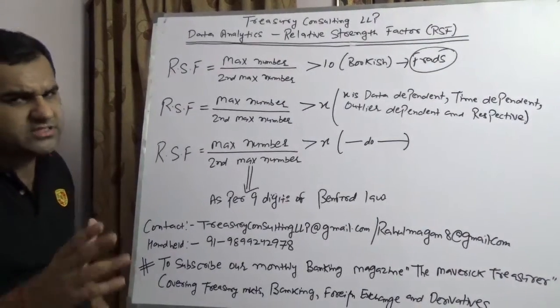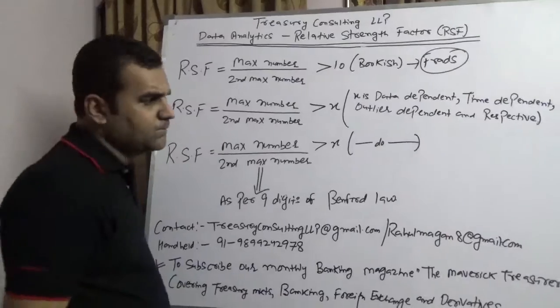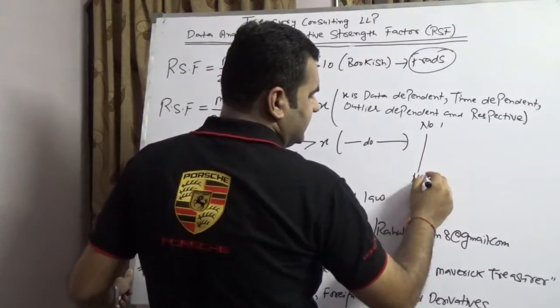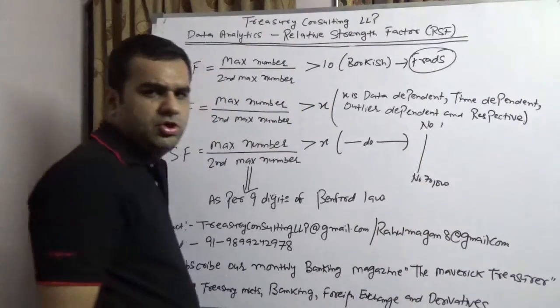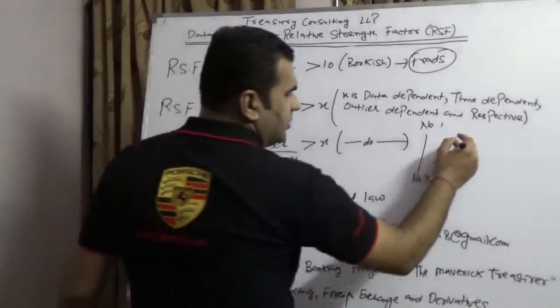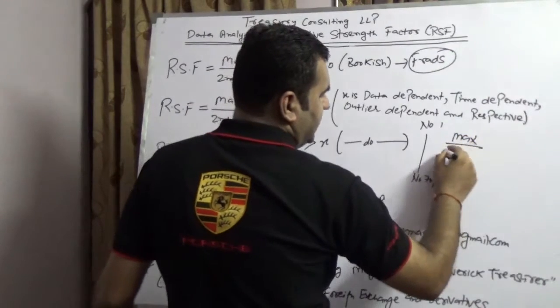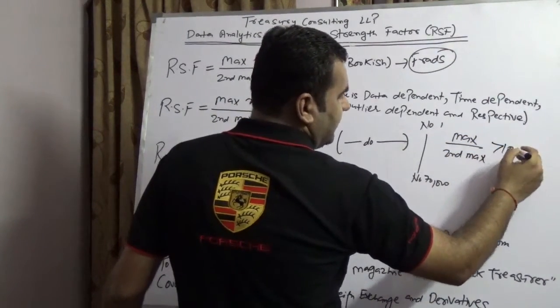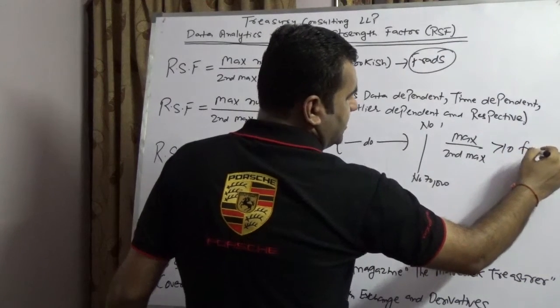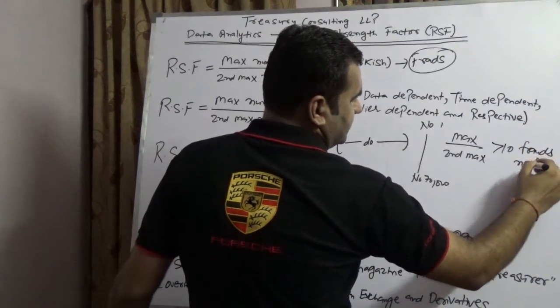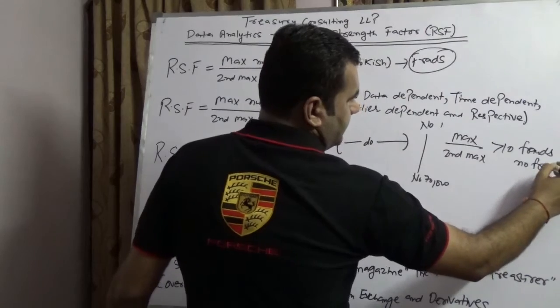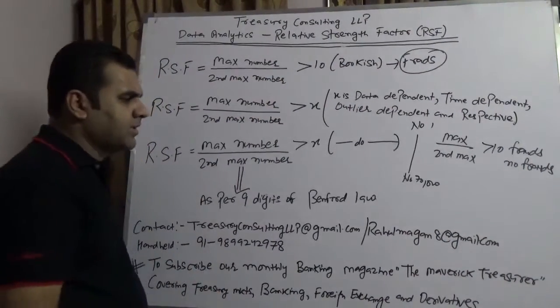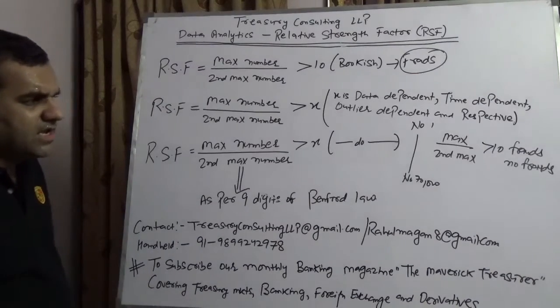Take a simple example I'm demonstrating here. You have a number one to number 70,000. What are you going to do? You will do simple mathematics, you will take the maximum here and you will take the second maximum here, and you will say greater than 10. If it is there, then it's a fraud, else no fraud. But that is not right, that is not right.